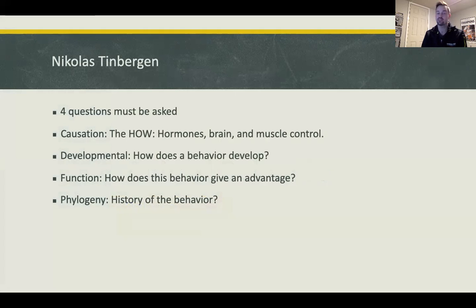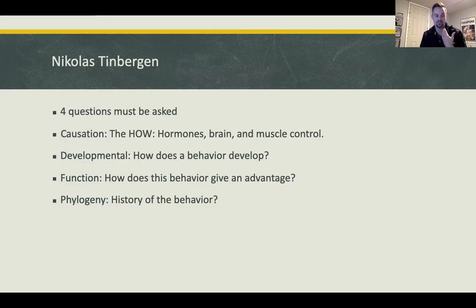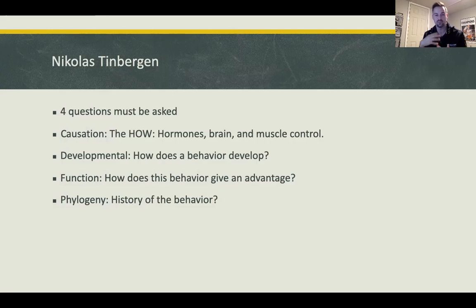Causation involves the hormones, brain, and muscle control — it's what makes the anatomy work that way. For example, we know birds migrate south for the winter, but how do they do it? There are abilities in the brain to register magnetic fields, and that's the 'how' — the causation question.